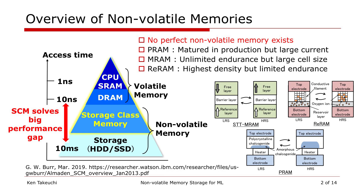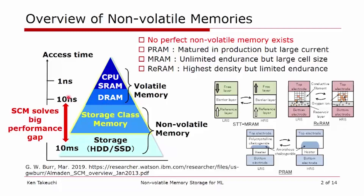Recently, there are many research results about STT-MRAMs, ReRAMs, and PRAMs, and they operate with different principles of set and reset. From the circuit point of view, in the case of PRAM, it's matured in production — we have a gigabit-level product. Still, they need a lot of current to set or reset because they need Joule heating to transit from the crystal to the amorphous phase.